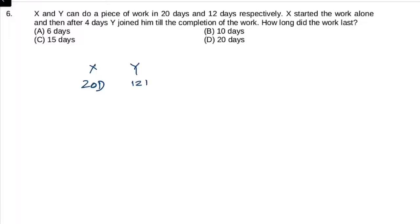X or Y kisi kaam ko 20 days or 12 days mein complete karte hain. To assume kar lo work done is 60 units. To X per day kitna kaam karega? 3 units. Aur Y per day kitna kaam karega? 5 units.